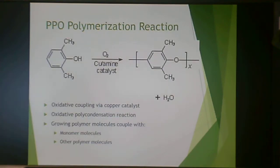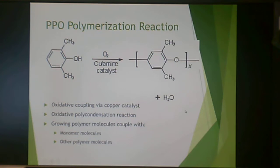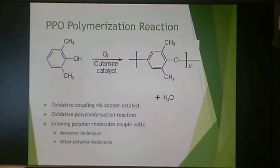This is how you make PPO. You have your monomer shown here in the presence of oxygen and a copper and amine catalyst to make polyphenylene oxide, with water as a byproduct. This is oxidative coupling — an oxidative polycondensation reaction. Growing polymer molecules couple with either monomers or other polymer molecules, so it's kind of an in-between in terms of polymerization reaction.